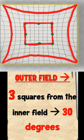The outer field is situated three squares from the inner field, and therefore if you calculate from the central fixation point, the outer field is a total of about 30 degrees.